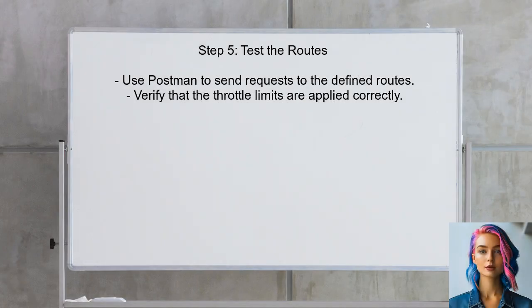Finally, test the routes to ensure that the new throttle settings are working as expected. You can use tools like Postman to send requests and verify the limits.